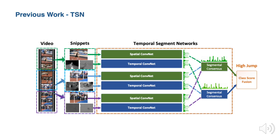As shown in the slides, TSN divides the input video into K segments, and a short snippet is randomly selected from each segment. The class score of each snippet is fused to yield segmental consensus, which is a video-level prediction. The predictions from all modalities are then fused to produce the final prediction.